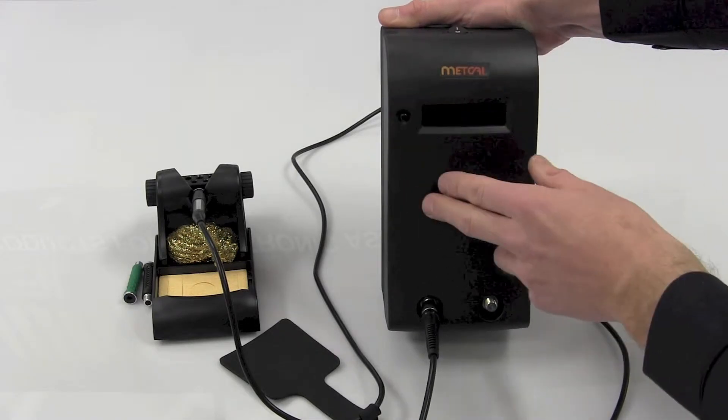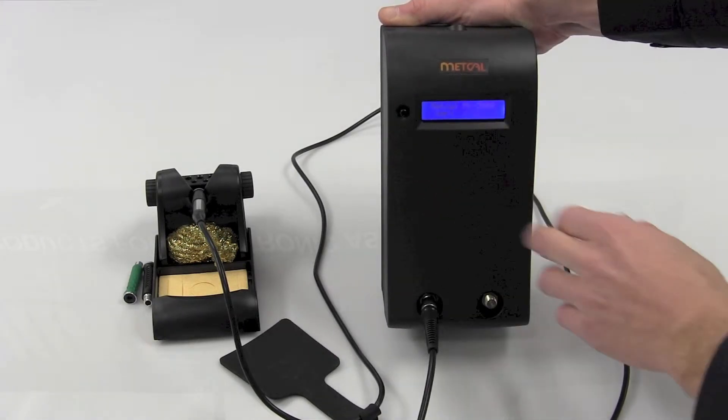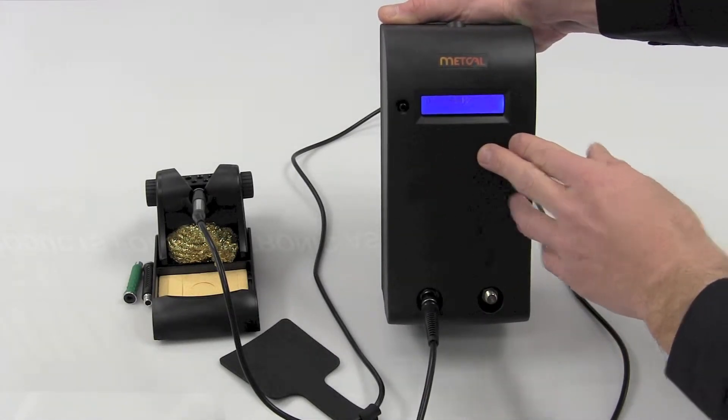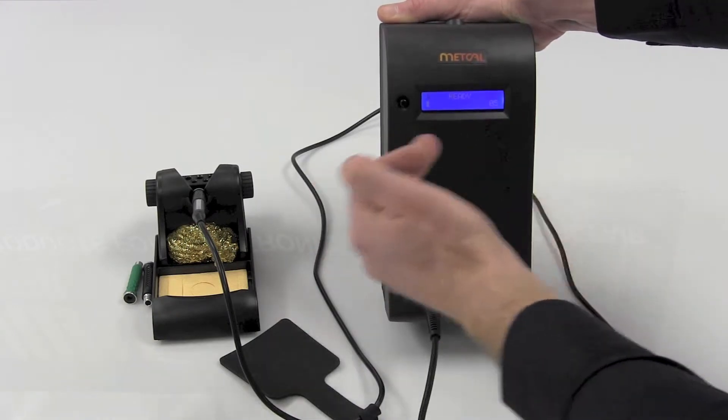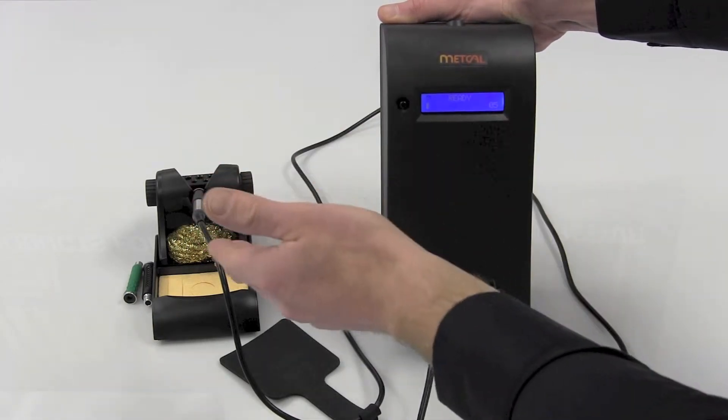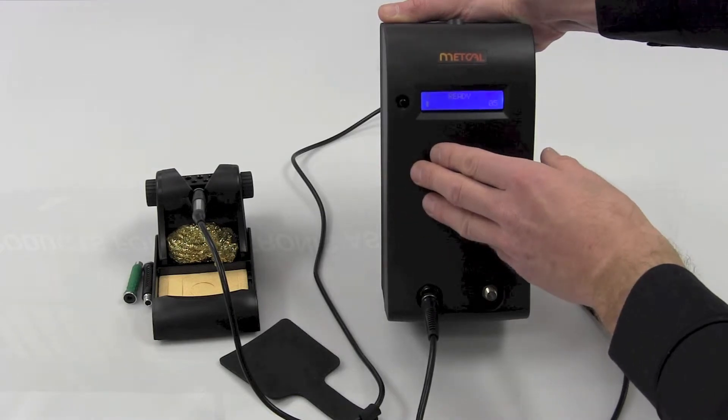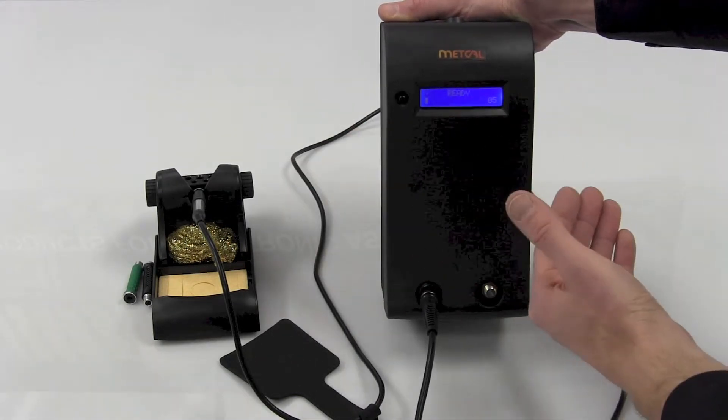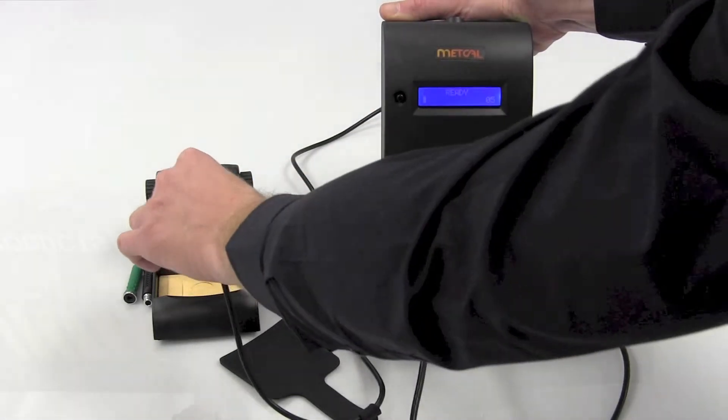The unit itself also has an integrated power meter, which is a lovely feature. As you fire up the station, you're going to see right here it has a ready and 05. The reason why it's only at 05 is because our iron is in its tip saver stand. When I pull it out of the tip stand, you'll actually see that ramp right up.